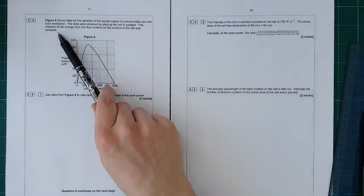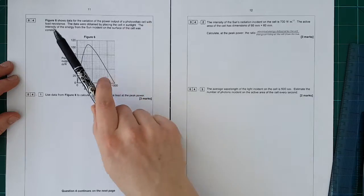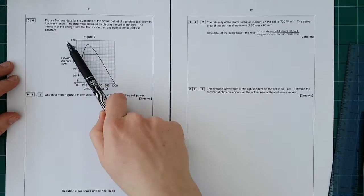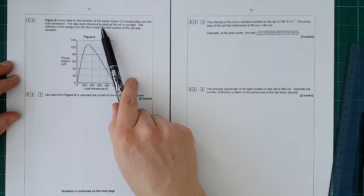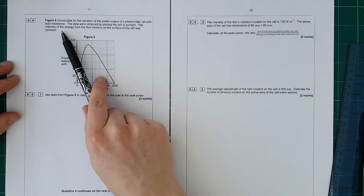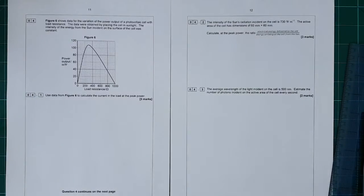Question 4. Figure 6 shows data for the variation of the power output of a photovoltaic cell with load resistance - power versus load resistance. The data were obtained by placing the cell in sunlight. The intensity of the energy from the sun incident upon the surface of the cell was constant.